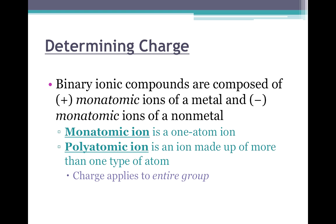To determine the charge of a compound or molecule, first you have to figure out whether you have a binary compound or a poly compound. The prefix bi means two, so a binary compound is one composed of only two elements. It's going to have a positive monoatomic cation and a negative monoatomic anion. Mono means one, so monoatomic just means an ion made up of one element.